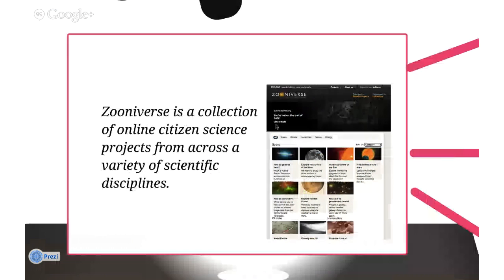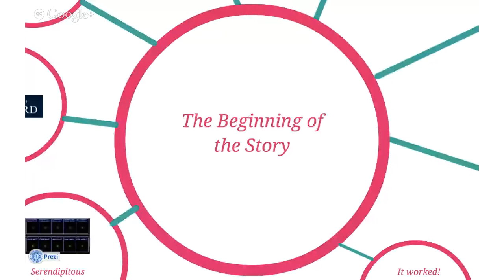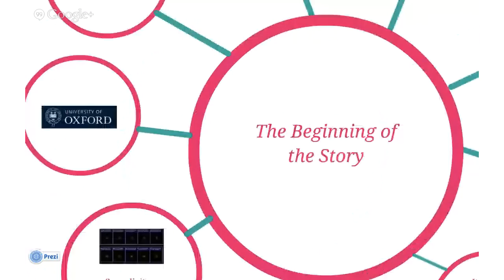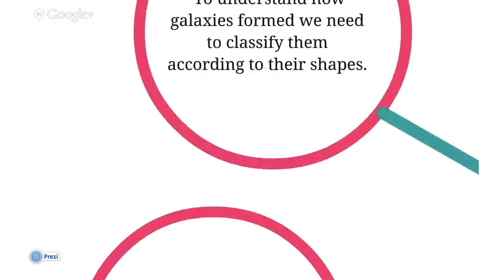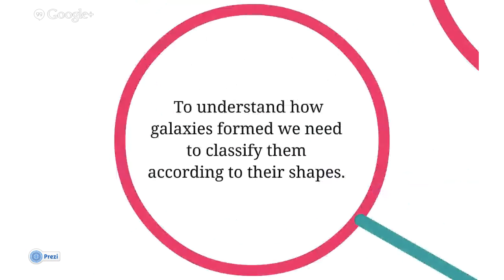The best place to start is at the beginning. About seven years ago, in the tranquil town of Oxford in the UK, at the University of Oxford, there were several astrophysicists mulling things over in the pub one night. Something to know about astrophysicists is that there aren't very many of them and they have a lot of data to deal with. These particular astrophysicists were interested in studying the formation and evolution of galaxies. To understand how galaxies form, you need to classify them according to their shape.